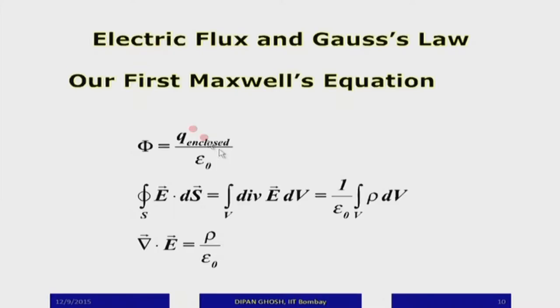Good afternoon. We will continue from where we left and expect to finish our discussion of electrostatics today. What we did just before lunch is to look at Maxwell's equations. Gauss's law states that the flux through any closed surface is given by the amount of charge enclosed divided by epsilon 0, and we used the divergence theorem to convert this into the differential form of Gauss's law.